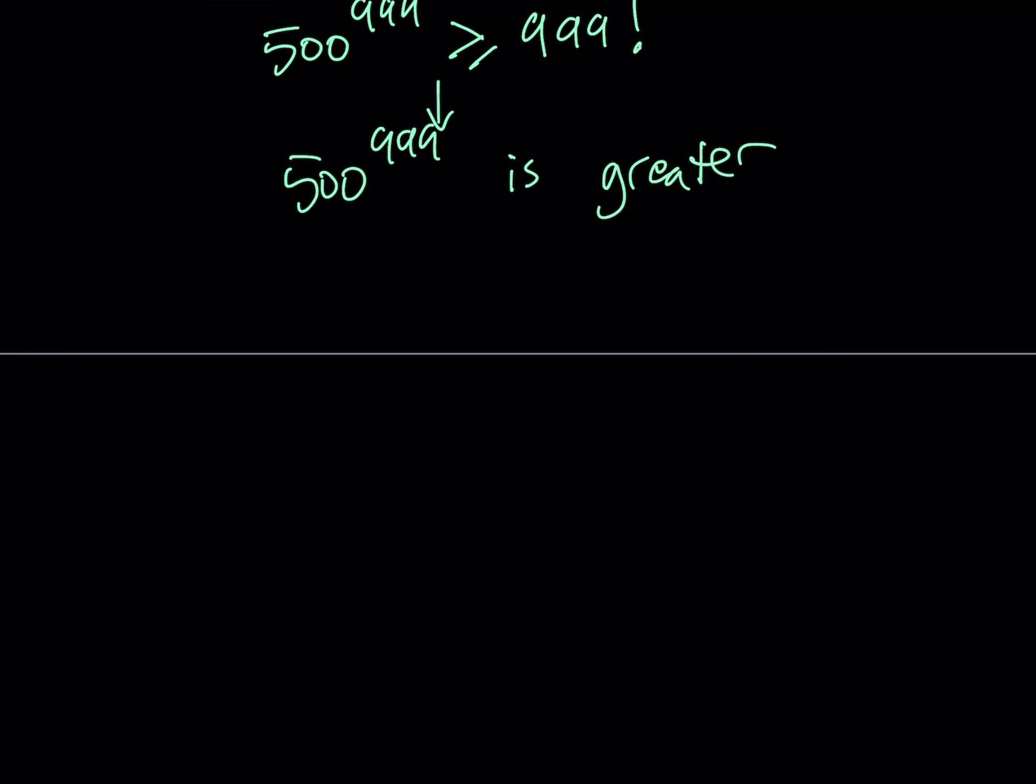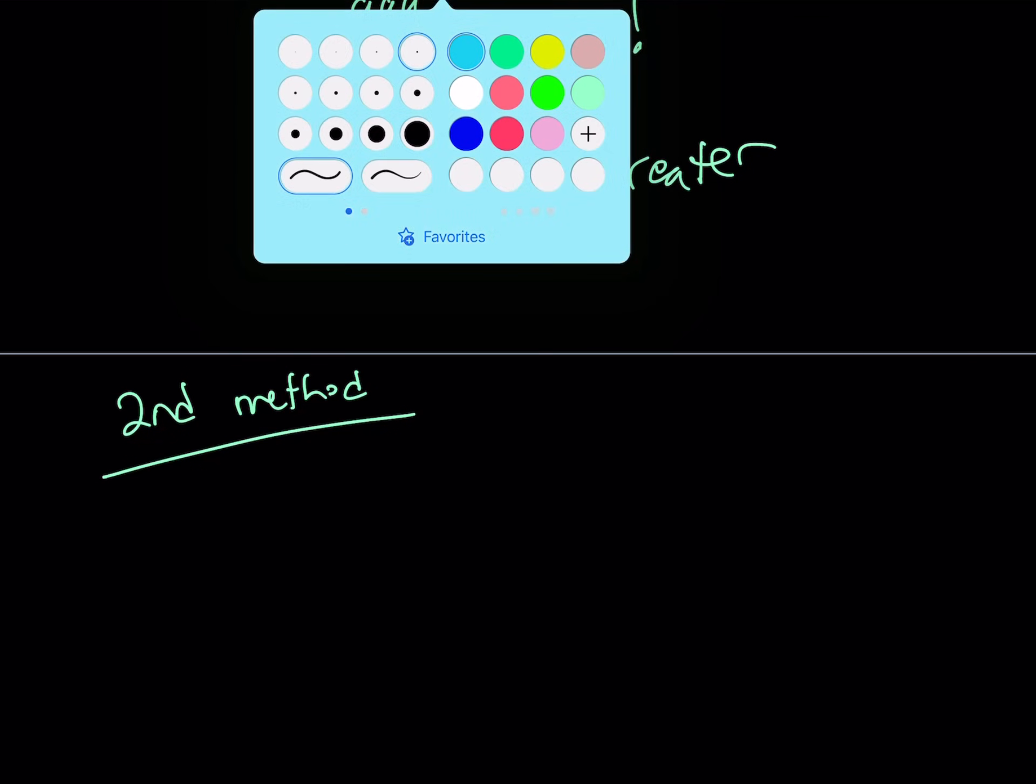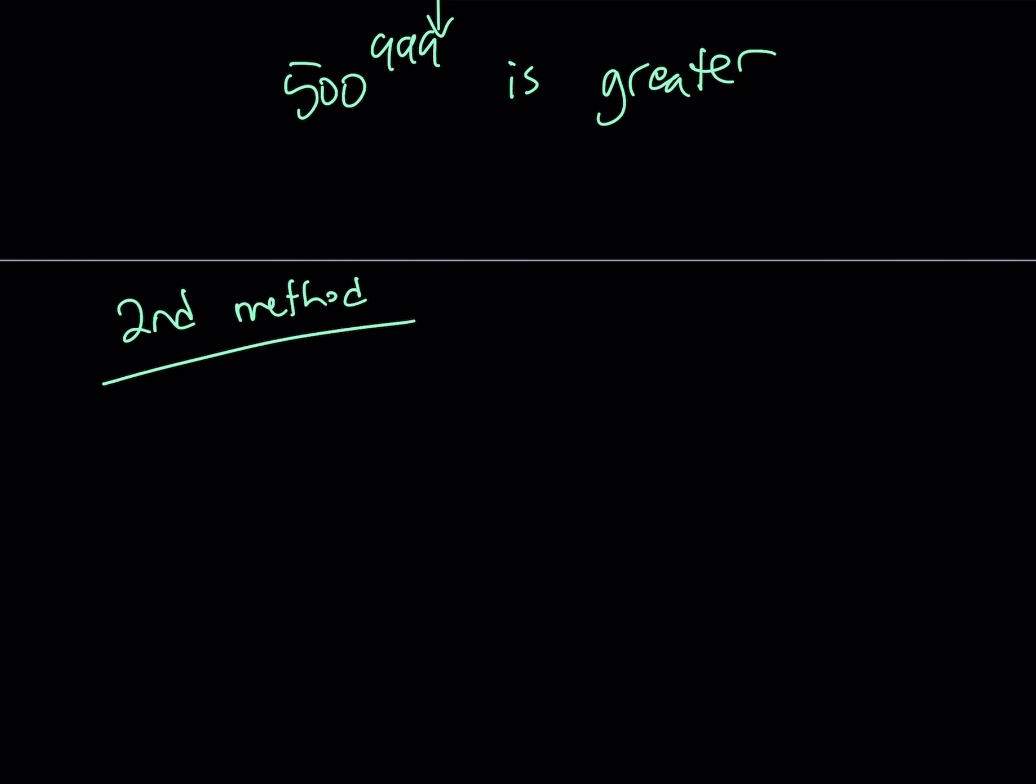Let's go ahead and take a look at the second method. My second method is kind of different. Using my second method, I'm going to start off with something weird. We're comparing 999 factorial and 500 to the power 999. So it kind of makes sense to take the 999th root of both sides. So I'm going to take the 999th root of 999 factorial.